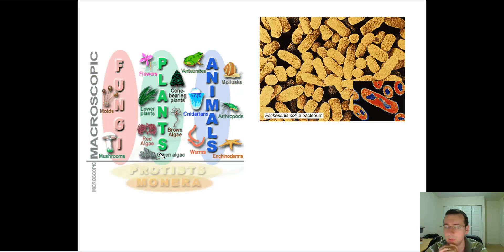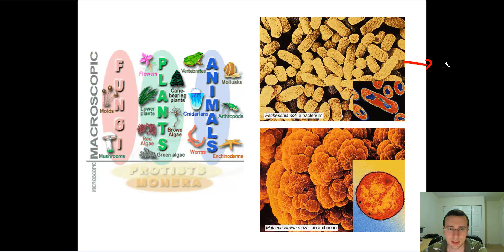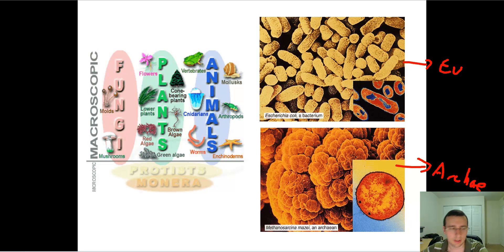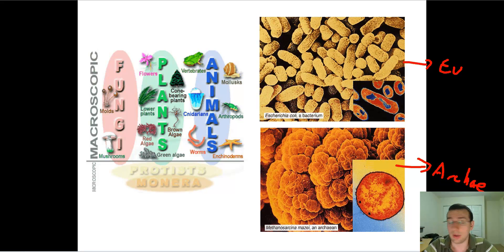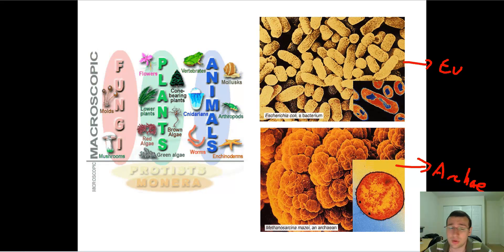The five-kingdom classification had another bigger problem: the Monera kingdom can actually be split into two main kinds of organisms. You have organisms like E. coli, called eubacteria, and then you have organisms like Methanosarcina, which we now call archaeabacteria. Archaeabacteria resemble ancient types of bacteria that lived in the harsh environments of the early Earth, some of which still exist today. Eubacteria are more advanced bacteria that cause diseases and live in symbiotic or parasitic relationships with other organisms. The degree of difference between these two groups is so great it almost doesn't make sense to put them in the same kingdom.